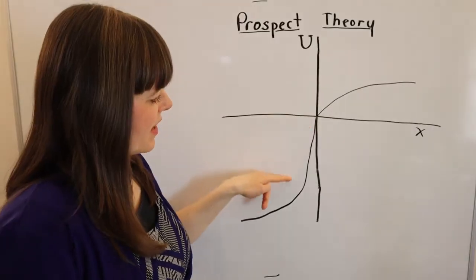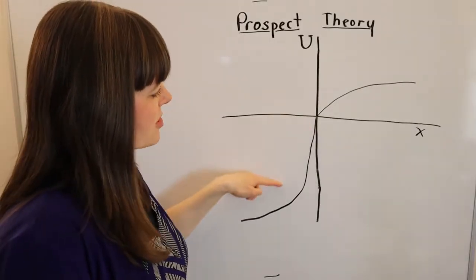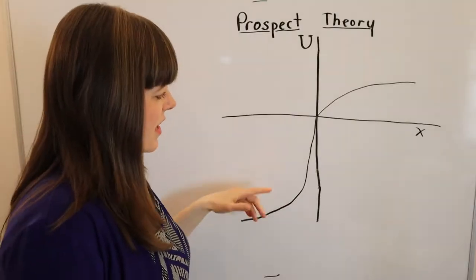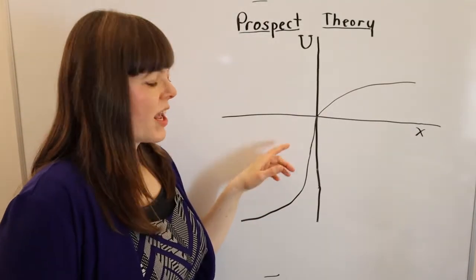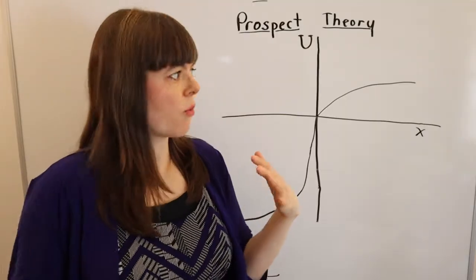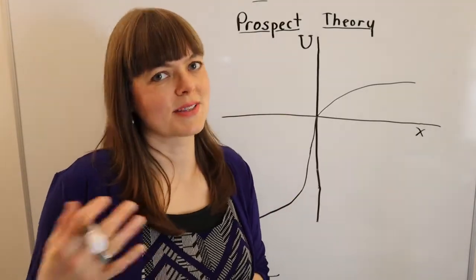But when we move into the negative quadrant, the curvature changes from concave to convex in this negative quadrant, in this third quadrant, in which case we get more risk-seeking behavior in this quadrant. So we're going to talk about what those three things mean and give some examples.